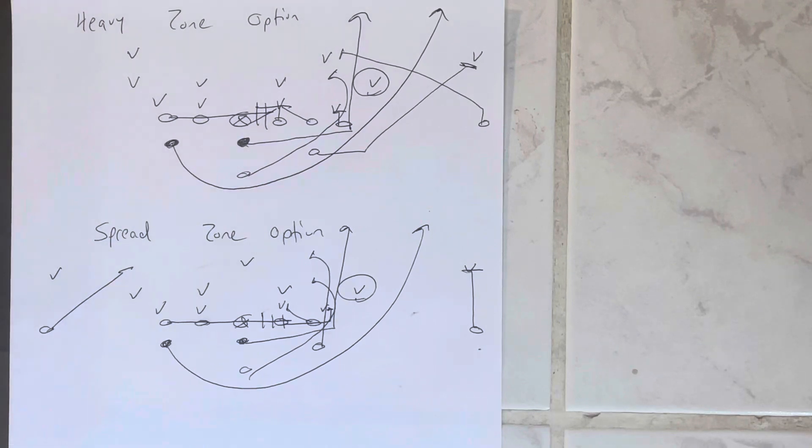Now, when you run it out of spread, it's much harder to run because you don't have surface. So now there is no third guy in the surface. So you've got the receiver split out wide. You're under a center because it's spread formation. So you've got the receiver blocking the deep defender. You've got the A-back loading with the B-back. So these two will have those two.